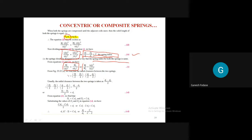Equations 4 and 5 are important. The key conclusion so far: the spring index of both springs will be the same (equation 4), and from that we derive W1/W2 = D1²/D2² (using wire diameters, equation 5). This equation will be used for solving numericals. W1 and W2 are the axial loads on the first and second springs respectively.